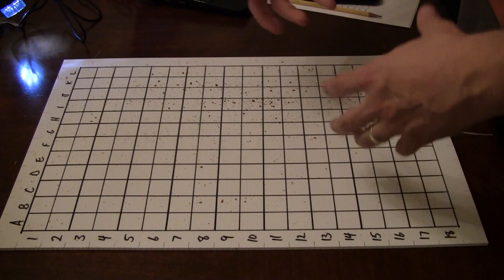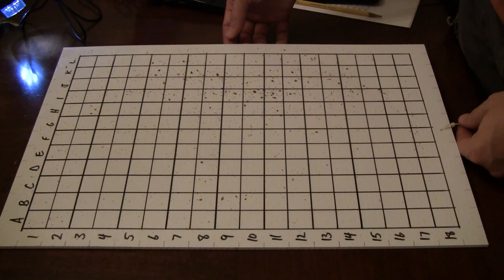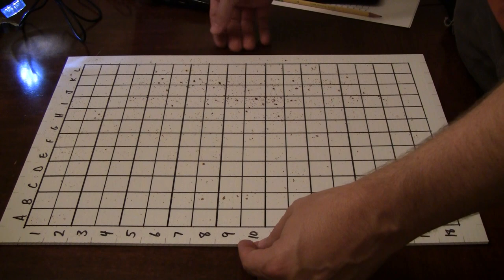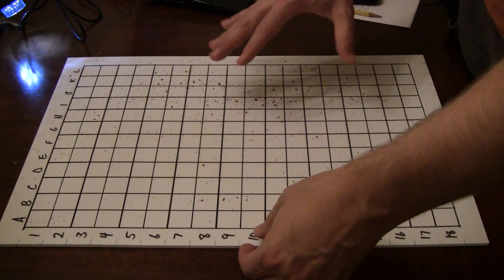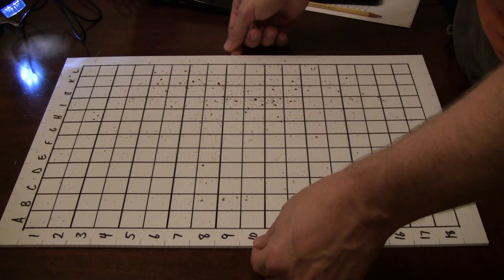Also in the spring you can use these boards to see if there's a nectar flow on. You'll see little white clearish flakes from the fresh wax that they're drawing out. I don't have much of that right now because there's not enough nectar flow for them to want to draw out new wax. As I do the count I'm going to go square by square looking for those mites.